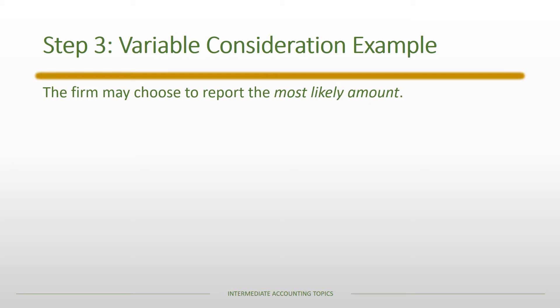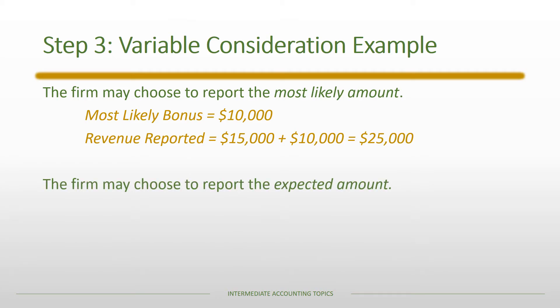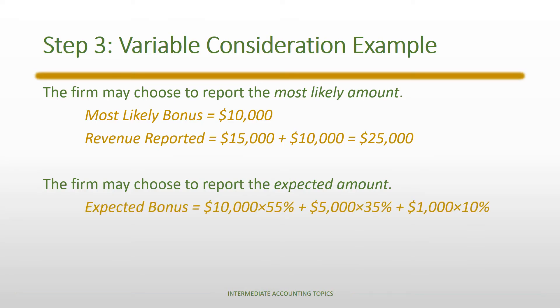If they choose to report the most likely amount, the most likely bonus is the $10,000 bonus, occurring 55% of the time — more likely than the other two combined. Then the revenue reported would be the $15,000 flat fee plus the most likely bonus of $10,000, for a total of $25,000 reported in January 2018. They also could choose the expected value, which is a weighted average of the bonus outcomes: the weight of $10,000, plus the weight of $5,000, plus the weight of $1,000.